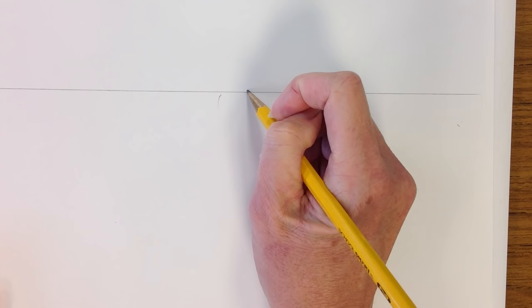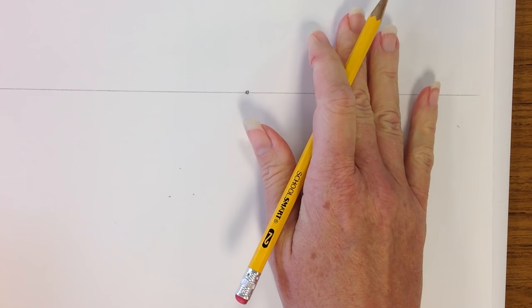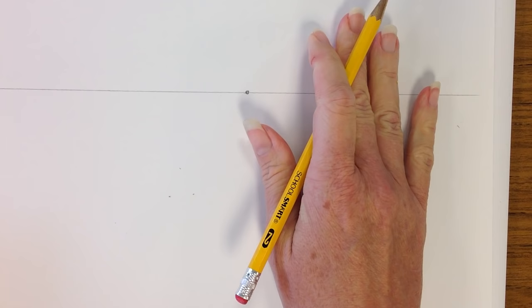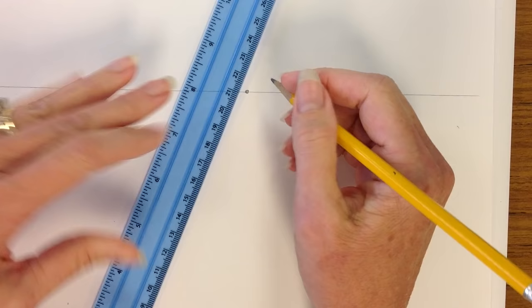Next, approximately in the middle we're going to add one little dot, just one little dot on your horizon line. This is called one point perspective and that's our vanishing point. Things are going to go back to that dot.